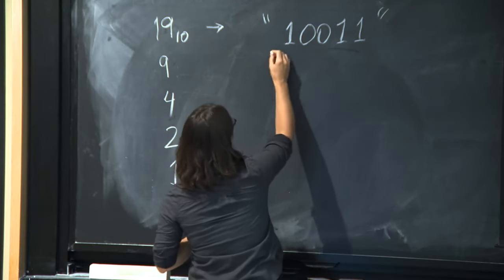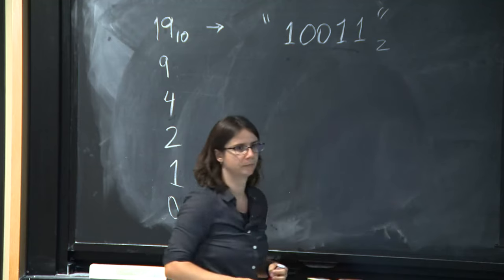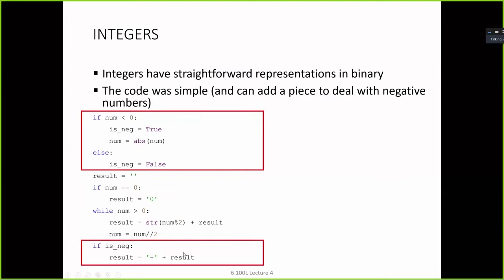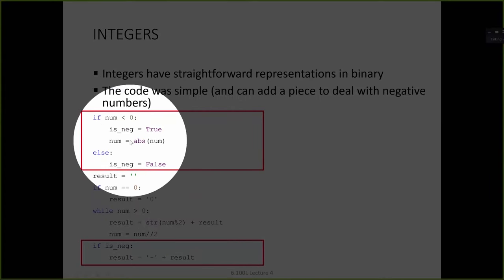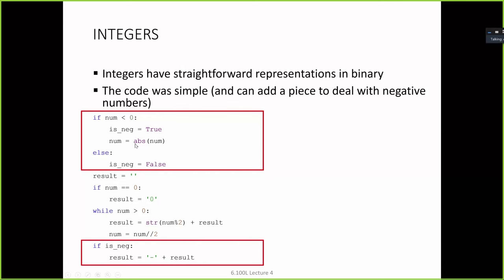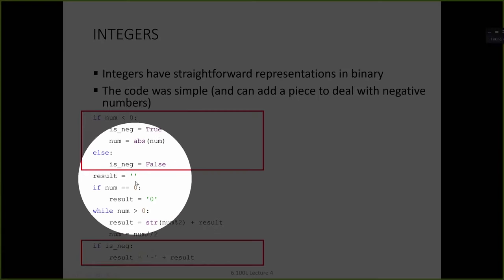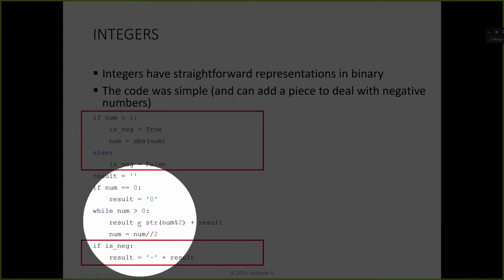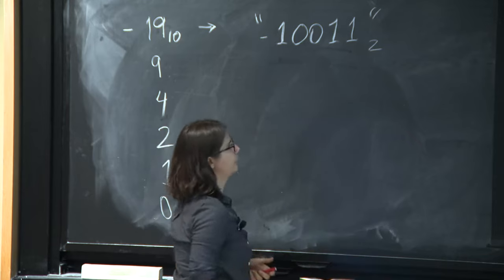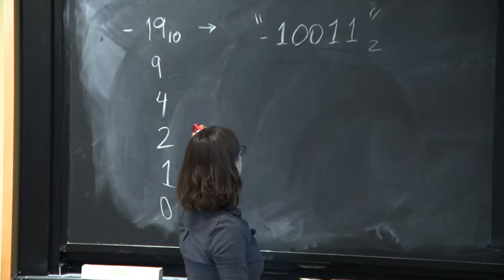So the binary representation of 19 was 10011 base 2. We just kept it as a string. The parts in red boxes deal with a negative number. So if the user wanted to convert negative 19 to a binary representation, the if-else up here says: is the number less than 0? If yes, let's set a negative flag to true and just assume the user gave us a positive number. So we convert negative 19 to its absolute value, positive 19. This code goes through as if the user had given us a positive number. And then at the end, we prepend a negative sign. So the binary representation of negative 19 is just negative, the same thing.